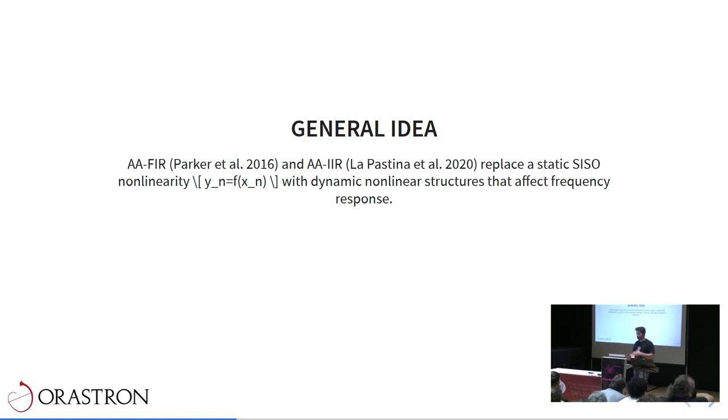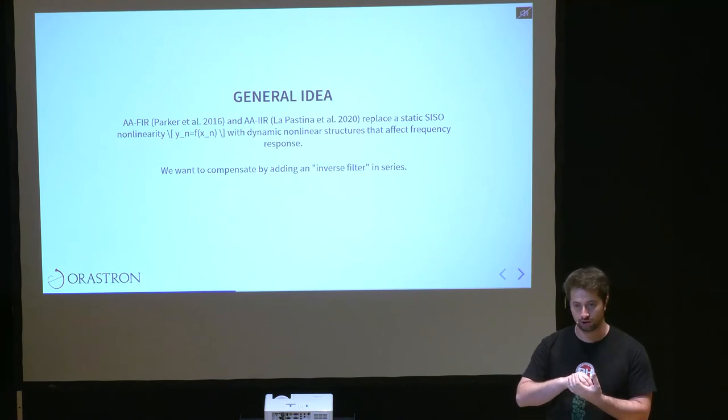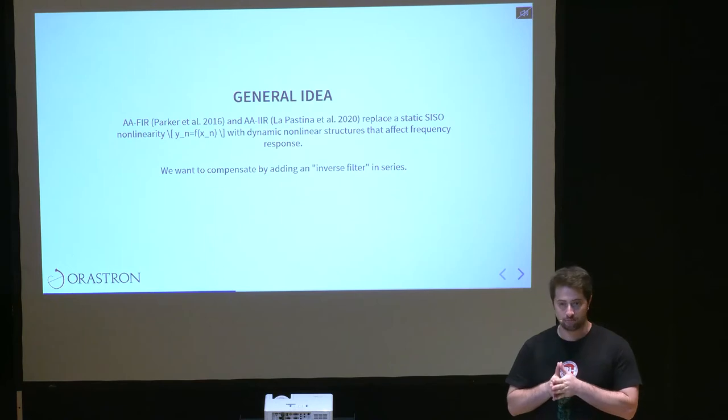One obvious way to reduce the aliasing in the output signal that you get from this non-linearity would be to oversample, and that's the standard technique that's been used for many years. But lately we have had other approaches to this problem that substitute the static non-linearity with a dynamic non-linear structure, which has some peculiarities.